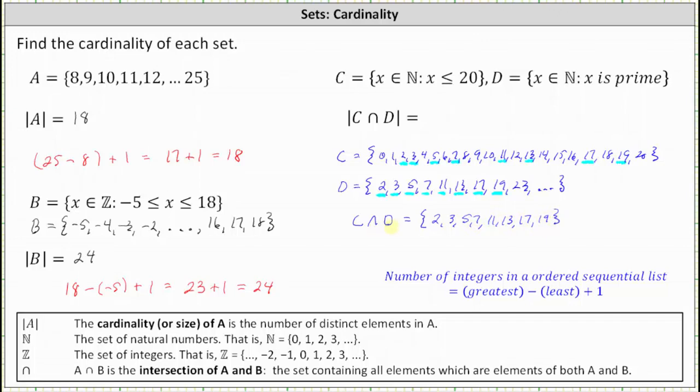The number of elements in the intersection of C and D is 1, 2, 3, 4, 5, 6, 7, 8. The cardinality of C intersect D equals 8.